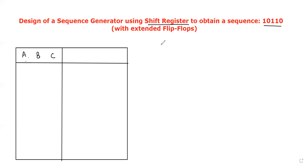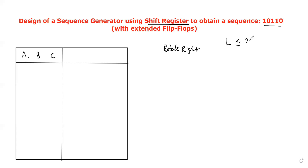In this, I have chosen the rotate-right-shift operation to obtain the sequence. Now to design the shift register, I have to find the minimum number of flip-flops required. The minimum number of flip-flops required should be obtained using the formula: L should be less than or equal to 2 power n minus 1, where L is the length of the given input sequence.